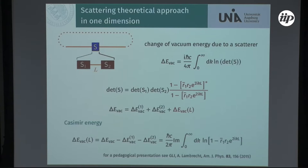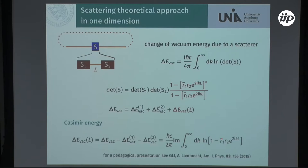You have a potentially infinite number of round trips of electromagnetic waves between these two scatterers. In the end, the total change of the vacuum energy consists of three contributions: a contribution coming from the first scatterer, a contribution from the second scatterer, and a rest which is finite — and that's precisely the Casimir energy. So in a sense the Casimir energy is a double difference — a difference of differences — and turns out to be finite. In the simple 1D calculation one calculates the logarithm of the round trip contribution: one minus the reflection at the first scatterer, reflection at the second scatterer, and the propagation in between.